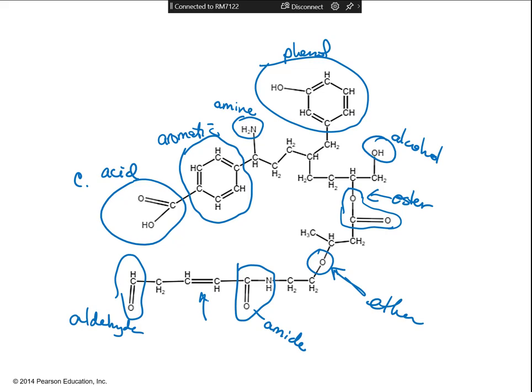What would this last thing be? There's a double bond between two carbons — this is an alkene. Remember, alkanes are all single bonds, but a double bond between two carbons with nothing else is an alkene.